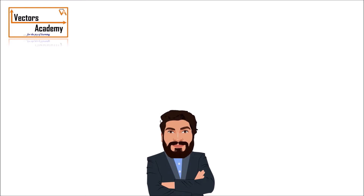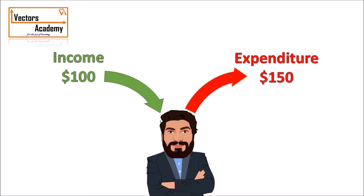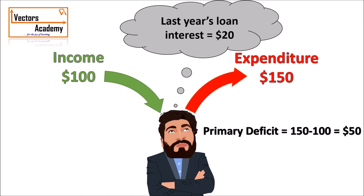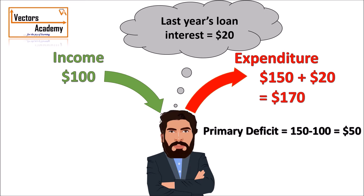Let's understand deficits with an illustration. Imagine you are the president of a small country with income of $100 and expenditure of $150. The difference of $50 is the primary deficit — the amount you need to borrow. Now if last year you also took a loan and the interest on it is $20, your total expenditure becomes $170. The fiscal deficit is the total expenditure including interest minus income, which equals $70.